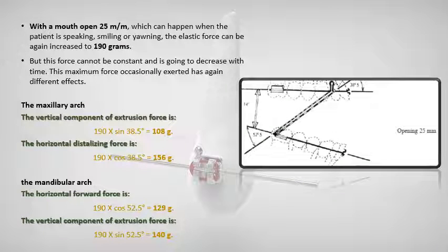When opening the mouth 25 millimeters — which can happen when the patient is speaking, smiling, or yawning — the elastic force can increase to 190 grams, but this force cannot be constant and will decrease with time. This maximal force occasionally exerted has different effects: in the maxillary arch the vertical extrusion component will be 108 grams and the horizontal distalization force will be 156 grams. In the mandibular arch, the horizontal forward force will be 129 grams and the vertical extrusion component will be 140 grams.